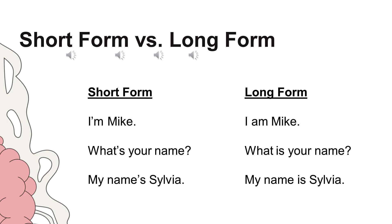For example: I'm Mike. What's your name? — that's the short form. I am Mike. What is your name? — that's the long form. My name is Sylvia. My name is Sylvia.